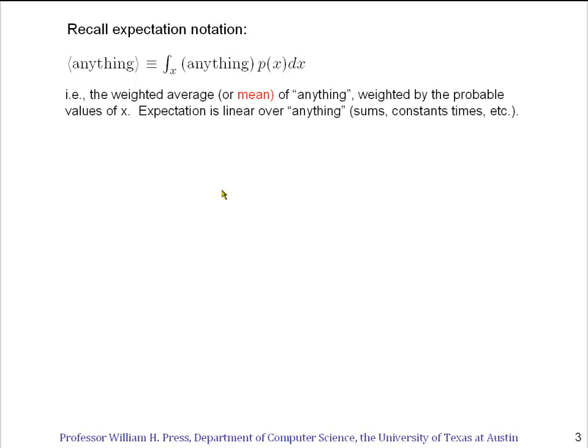We're going to use expectation notation a lot in this, so let's recall that the notation is when we put anything inside angle brackets. What we mean by that is we take anything, and we take its weighted average over all possible values of x, weighting by the probability distribution of x. Now since this is an integral which is linear, you can easily see that the expectation of anything is linear over sums of anything's constant times anything. In other words, we can move angle brackets around to take advantage of this linearity.